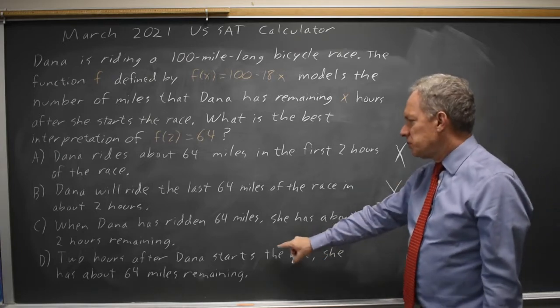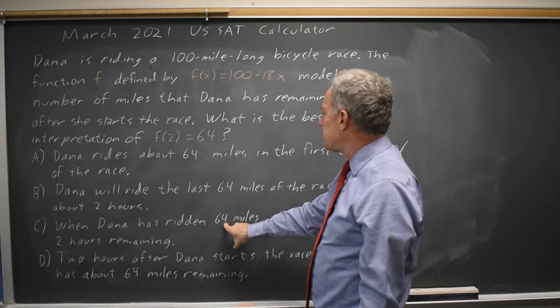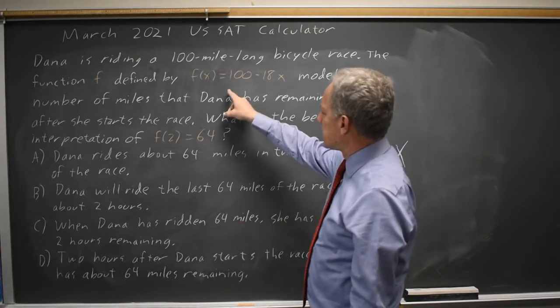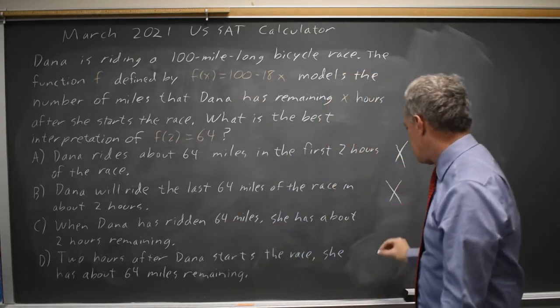Choice C, when Dana has ridden 64 miles, but we're talking about miles remaining in f(x), not miles traveled, so C is not correct.